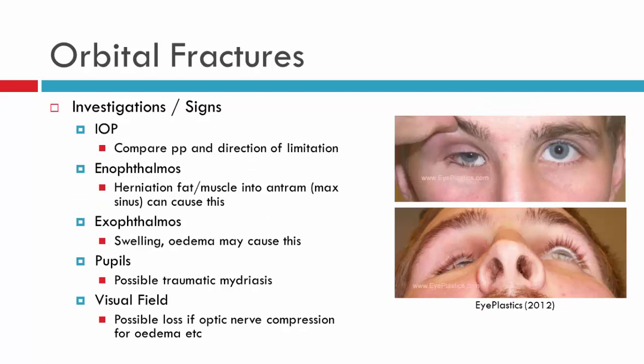Intraocular pressure can increase with mechanical restrictions — if you ask the patient to look into the area of limitation, you will see an increase in IOP. Enophthalmos or exophthalmos can occur. With enophthalmos, there has usually been herniation of fat or muscle, and the eye can become quite enophthalmic, as seen in the patient image here. Exophthalmos occurs when there is significant swelling of the surrounding tissue allowing the eye to protrude.